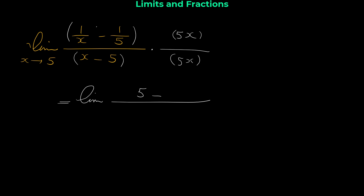5x times 1 over 5: the 5s cancel, leaving only x. Don't forget the negative sign in the middle, so we have 5 minus x in the numerator. In the denominator, do not distribute the 5x — keep it as x minus 5 times 5x.